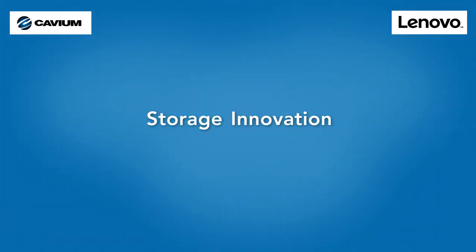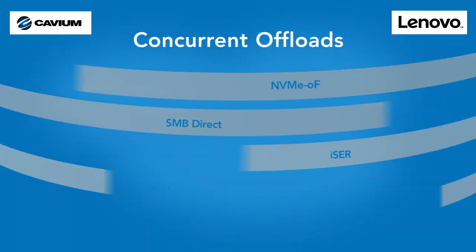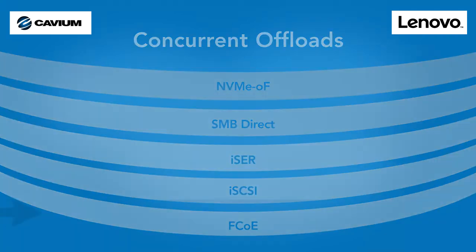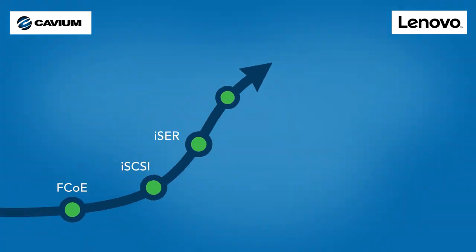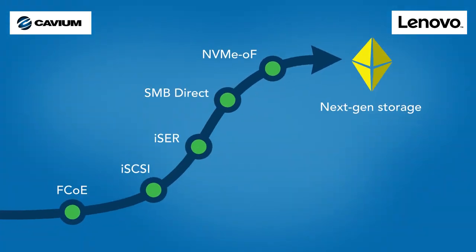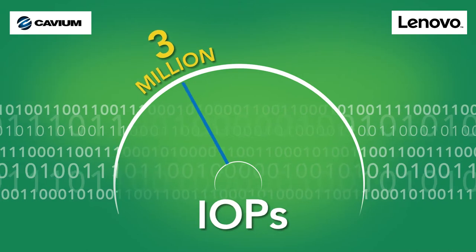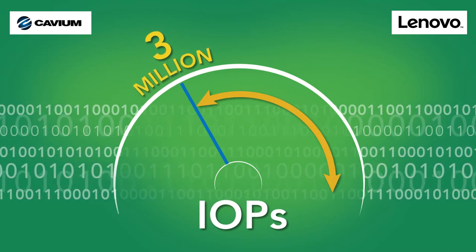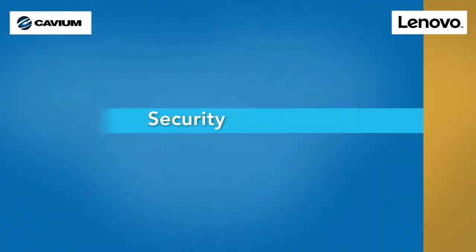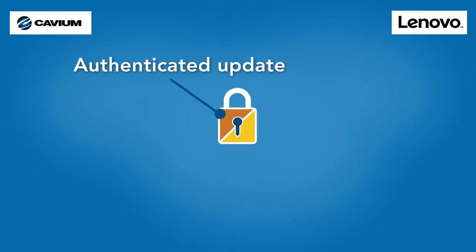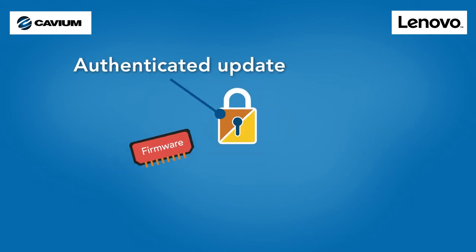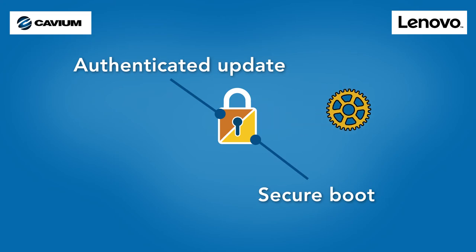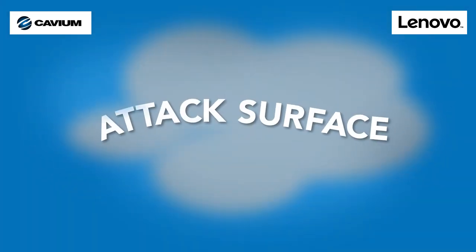Universal storage networking means concurrent offload for all storage protocols. It provides a seamless migration path to next-gen storage, and more than 3 million IOPs with plenty of headroom remaining for virtualized apps. Protections like authenticated updates to keep out rogue firmware and secure boot to foil rogue drivers reduce the attack surface.